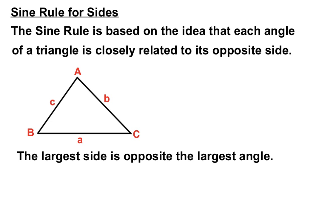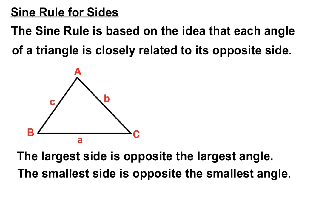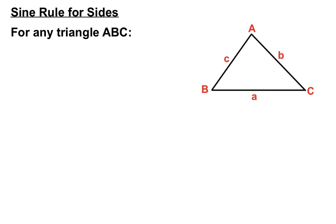If side a was longer, angle A would be bigger. If side c was shorter, angle C would be smaller. So sides and opposite angles are very closely related. The largest side of a triangle is always opposite the largest angle, and the smallest side is opposite the smallest angle. That's the basis for the Sine Rule.